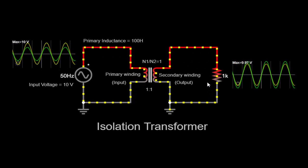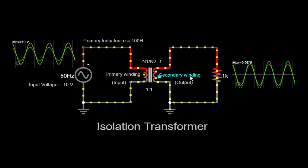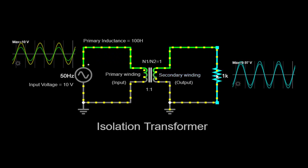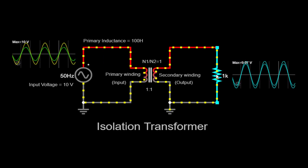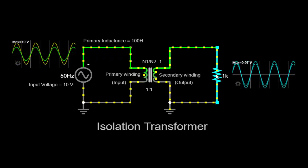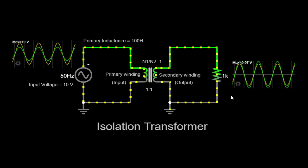Secondary winding and load: The secondary winding of the isolation transformer is connected to a resistor with a value of 1 kOhm. This resistor represents a load that draws current from the secondary side of the transformer. The load could be a device or a circuit that requires a specific voltage to operate correctly.